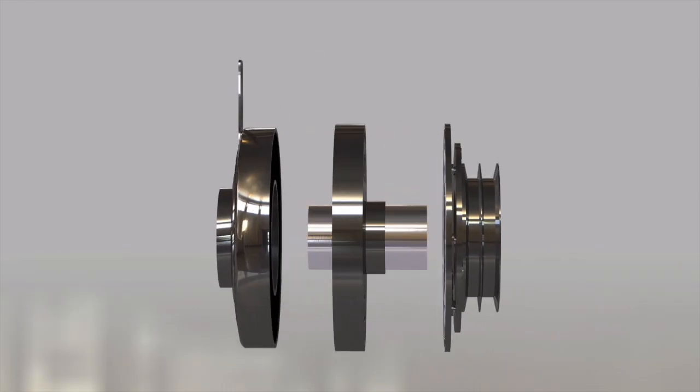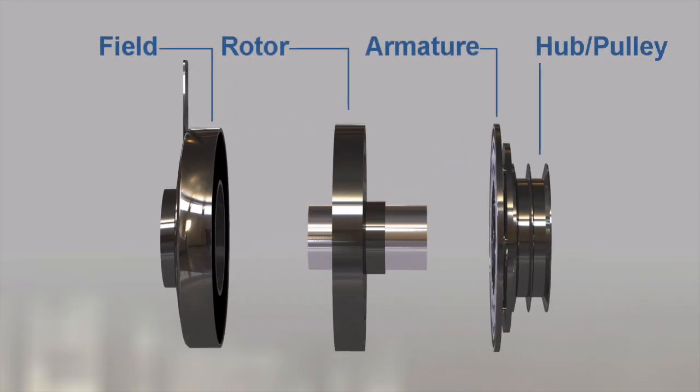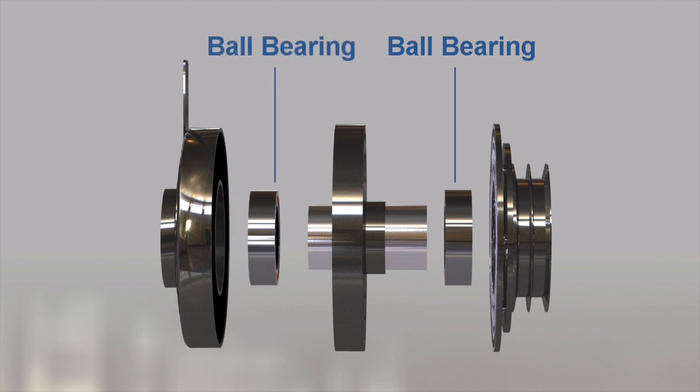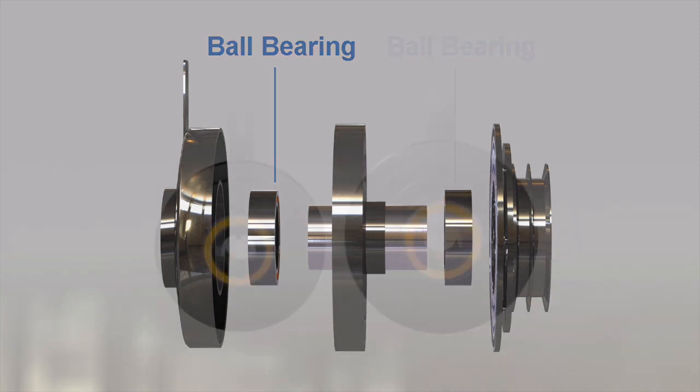The key components to the clutch are the hub or pulley, armature, rotor, and field. A ball bearing is mounted under the hub or pulley for support. Another ball bearing is located between the rotor and the field. It supports the weight of the field during rotation allowing the field assembly to remain stationary.